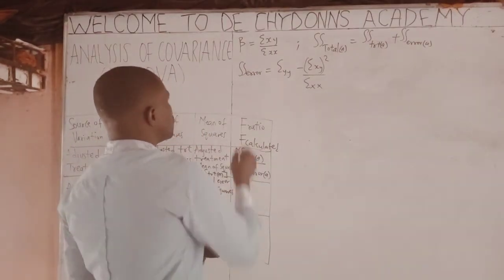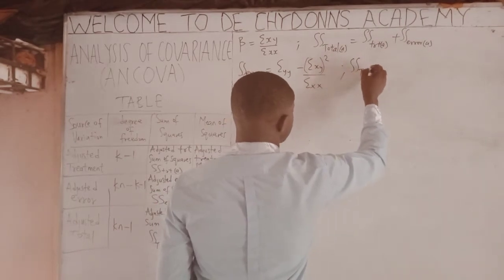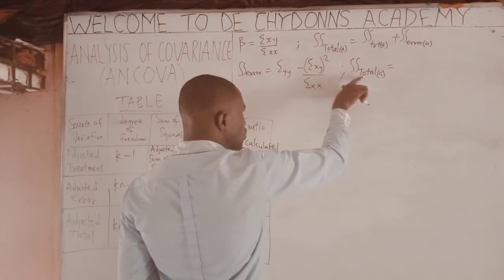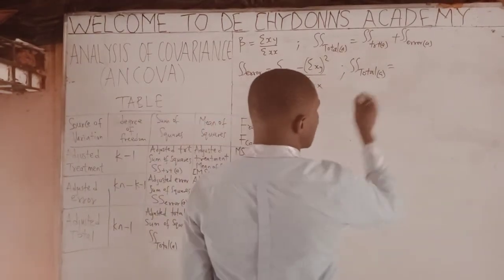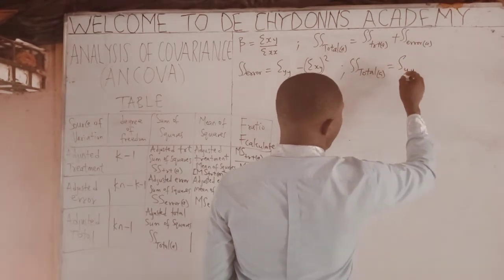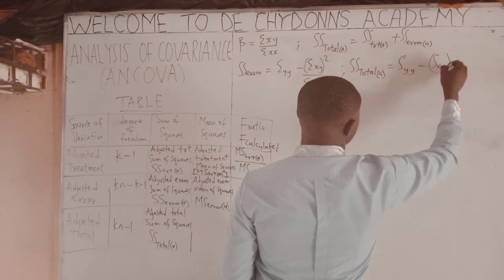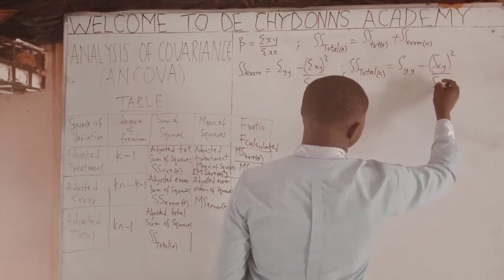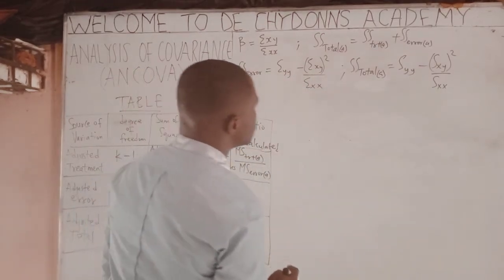We said SS total adjustment total — that adjusted total sum of squares — is equal to SYY minus SXY squared, all over SXX.